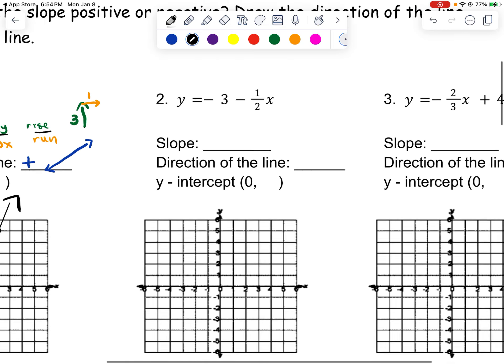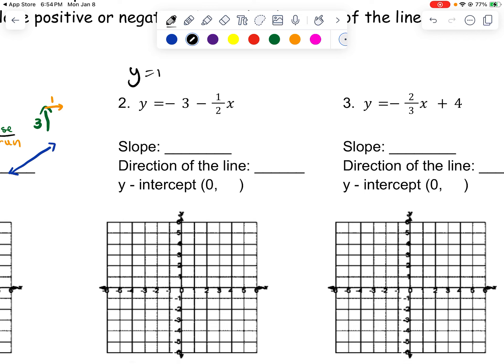Do you notice how this is not in y equals mx plus b form? It's actually in y equals b plus mx form, which is fine — you just have to remember that the slope is sitting in front of the x. So the slope is negative 1 half, which means a negative slope, going in the negative direction. The y-intercept is negative 3, so I'm going to plot negative 3 first.